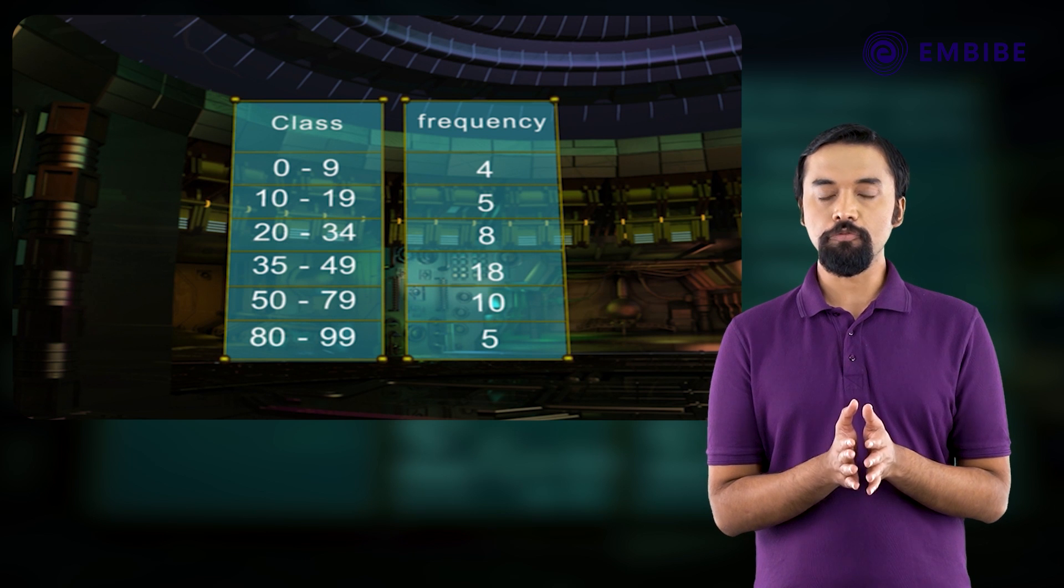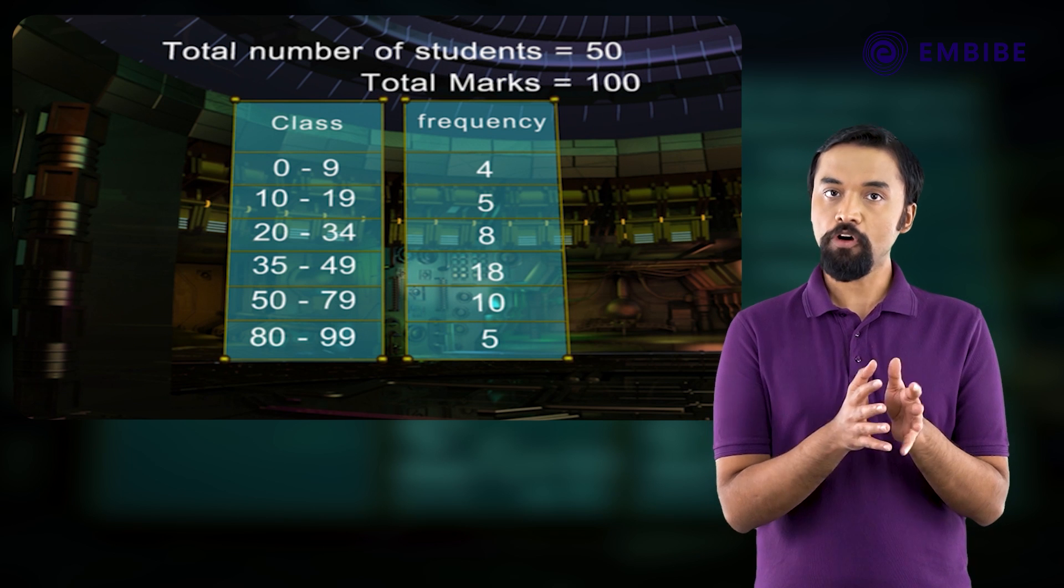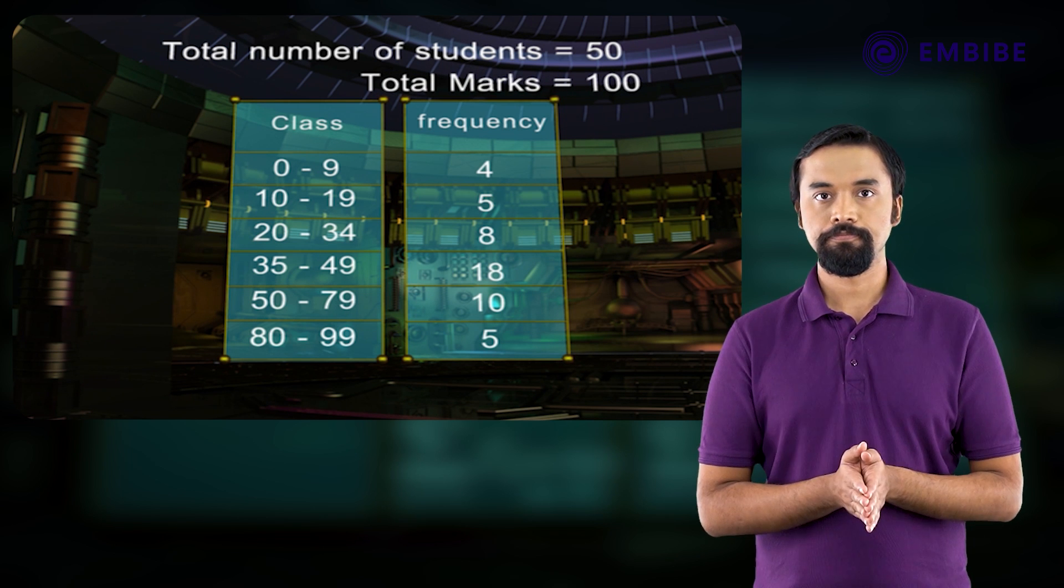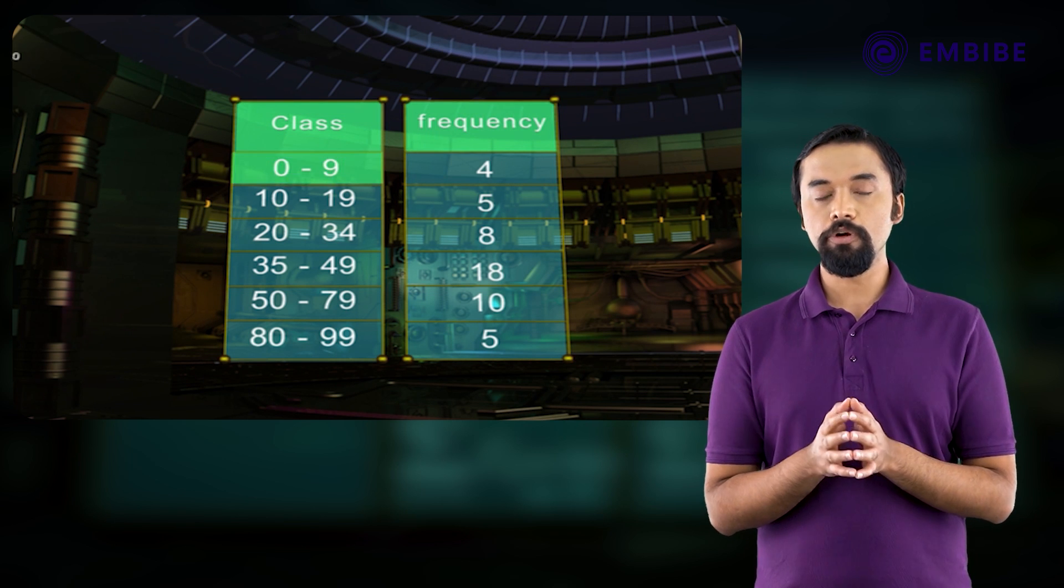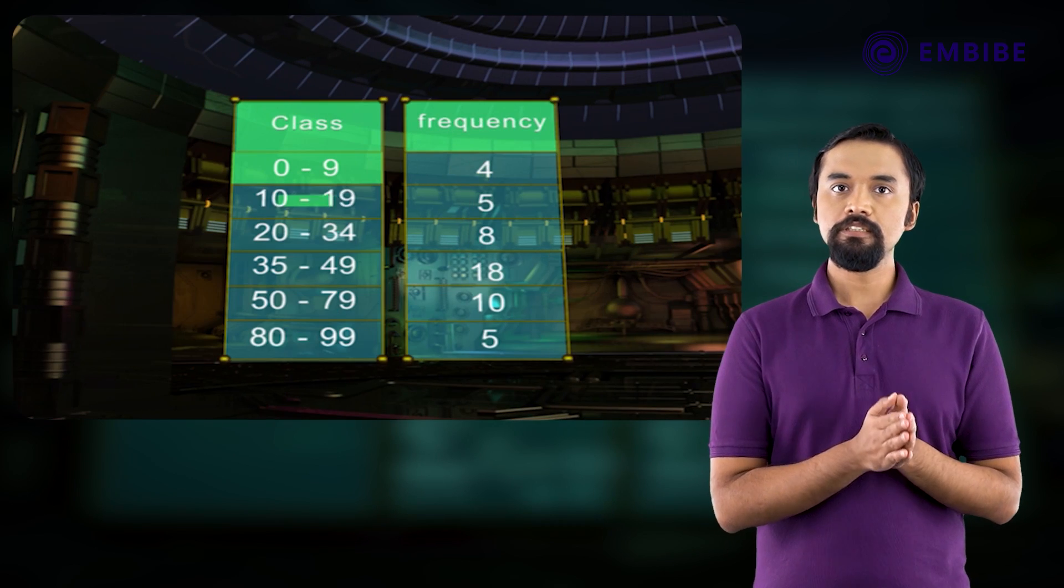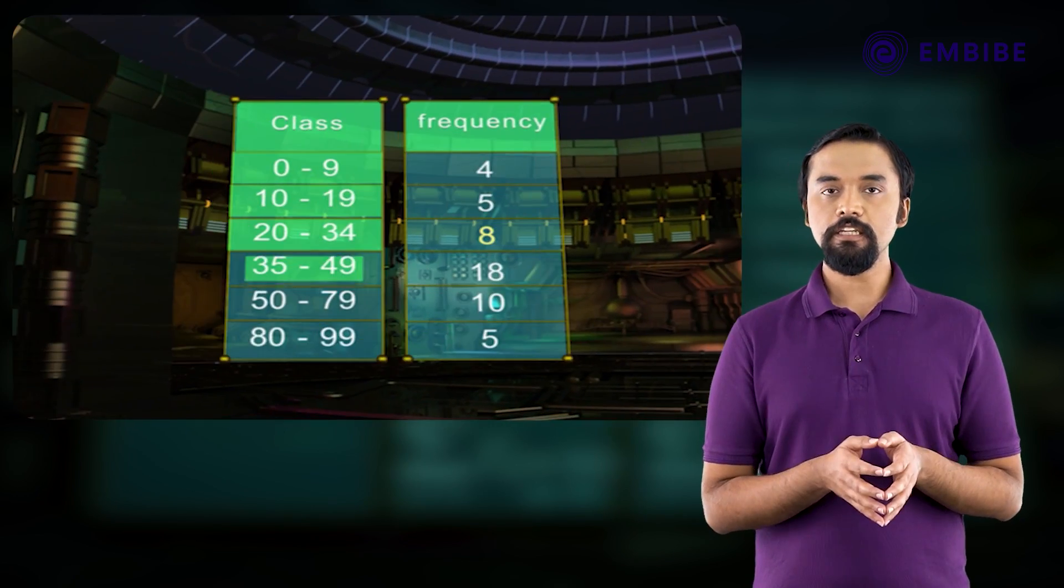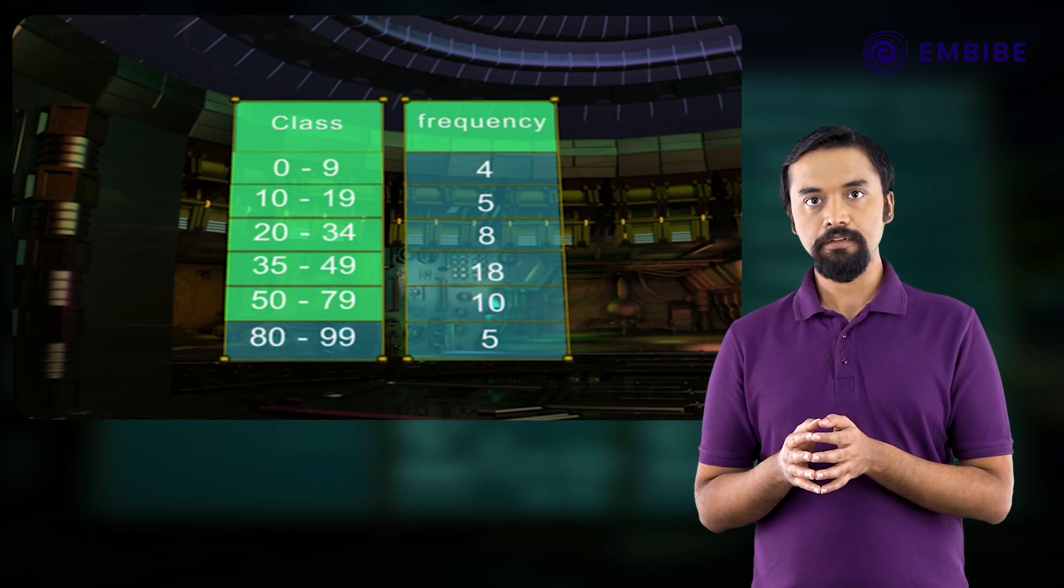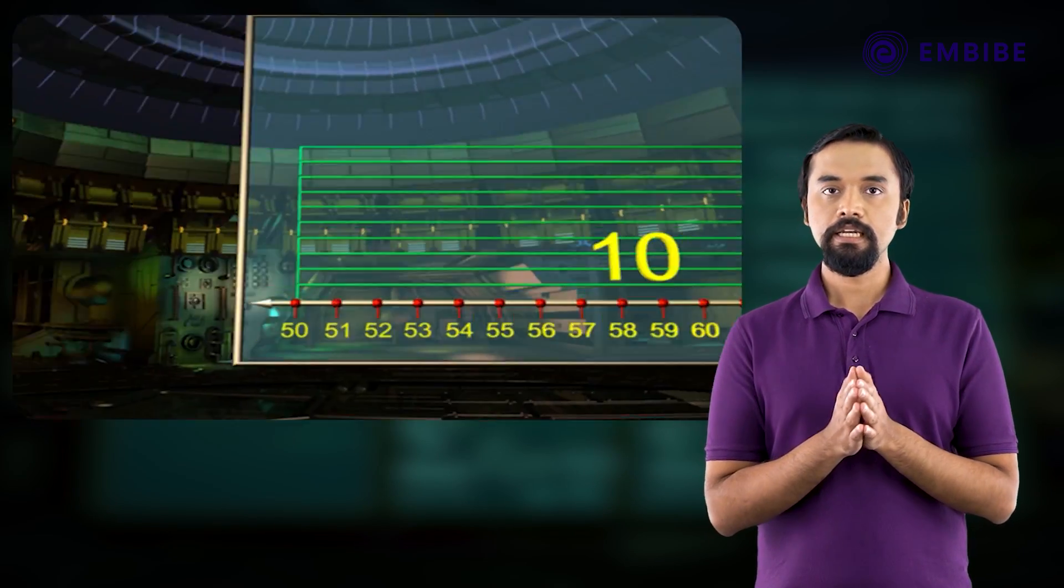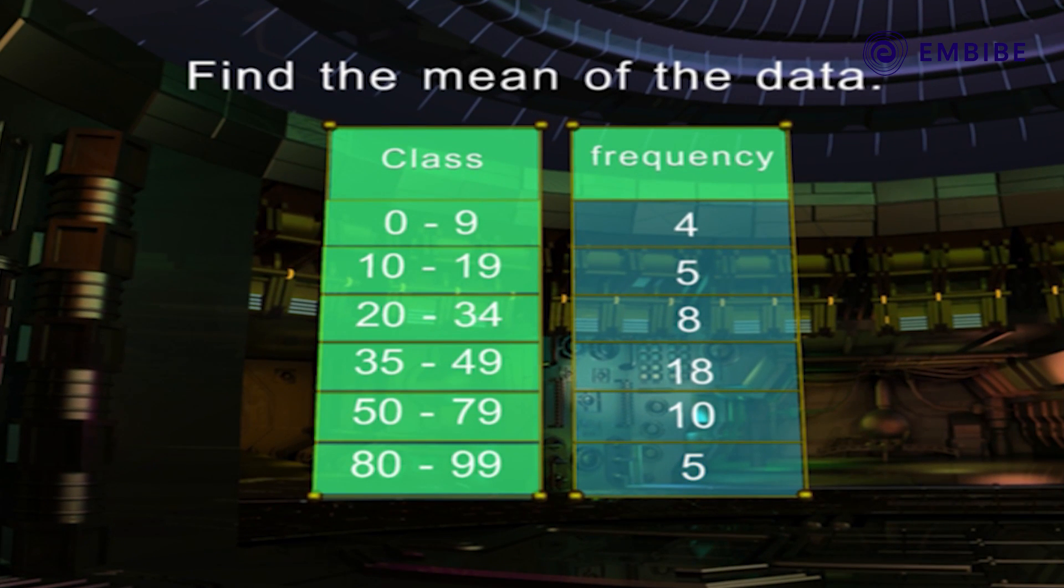A frequency distribution of marks obtained by 50 students in a science test of 100 marks is given below. Class: 0 to 9, Frequency: 4. 10 to 19, 5. 20 to 34, 8. 35 to 49, 18. 50 to 79, 10. 80 to 99, 5. Find the mean of the data.